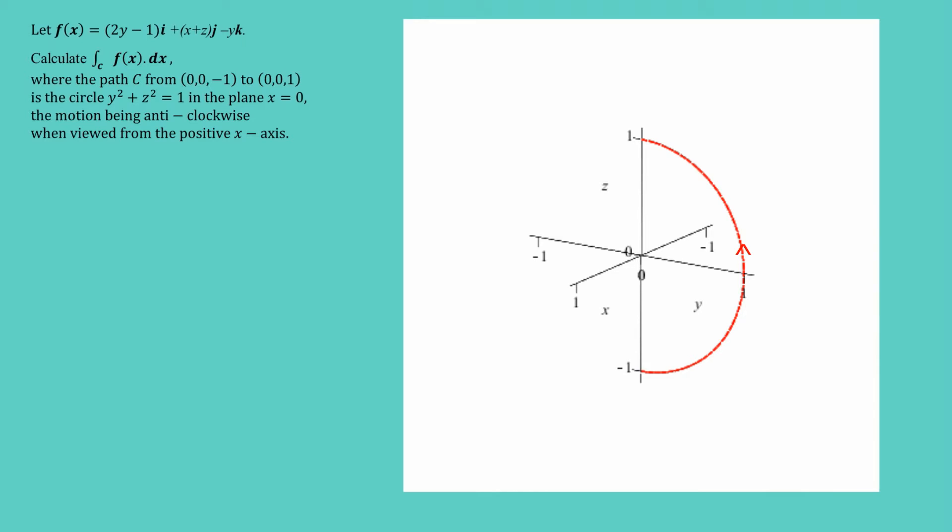Now, one thing that we're going to need to do is to parameterize the curve. We can't leave it in the form that we have in terms of being y squared plus z squared equals one. So it doesn't really matter how you parameterize this, as long as it's correct. So what I'm going to do is I'm going to take t, which I sort of think of being like time going from zero to pi.